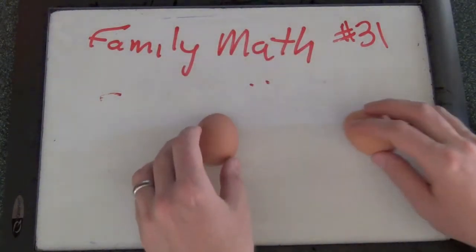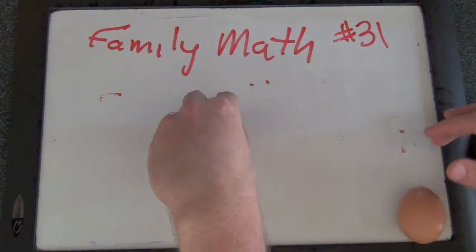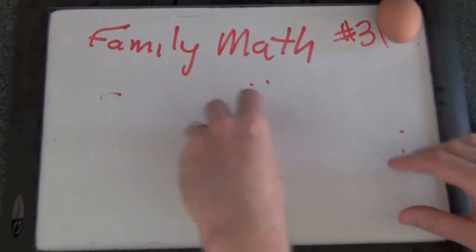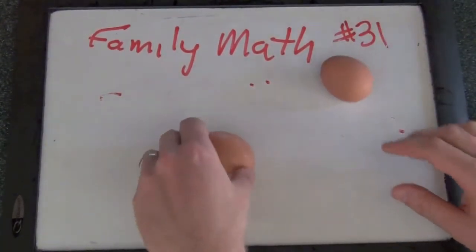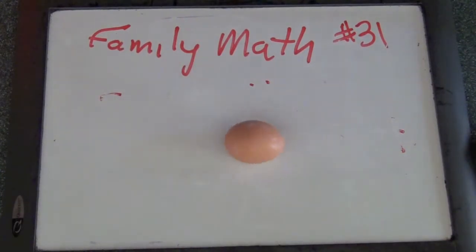Okay. Now there's another neat thing that hard-boiled eggs do. You ready for this? Second thing. If you spin a hard-boiled egg on its side, and then you stop it, and then let go, it stops spinning. But when you spin an un-boiled egg, just a regular raw egg on its side, and you stop it and let it go, it starts spinning again. Isn't that pretty neat? I wonder why that is.